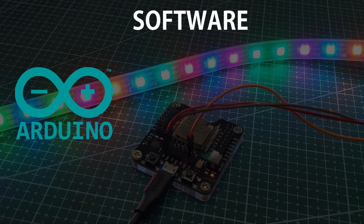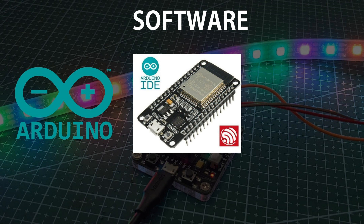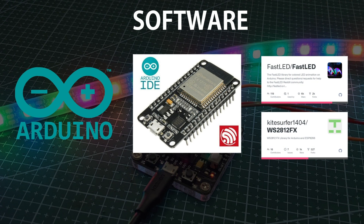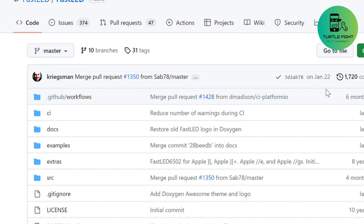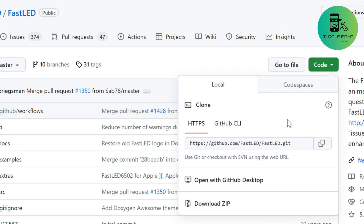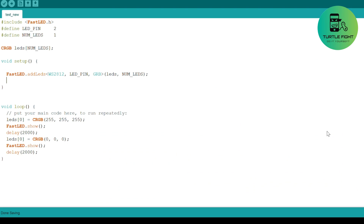Regarding software, we need Arduino IDE, ESP library, and two other libraries to control the LED. I will put all software links in the video description. On Google, search for the FastLED library, click download, and install it. It supports controlling ARGB LED in Arduino IDE.